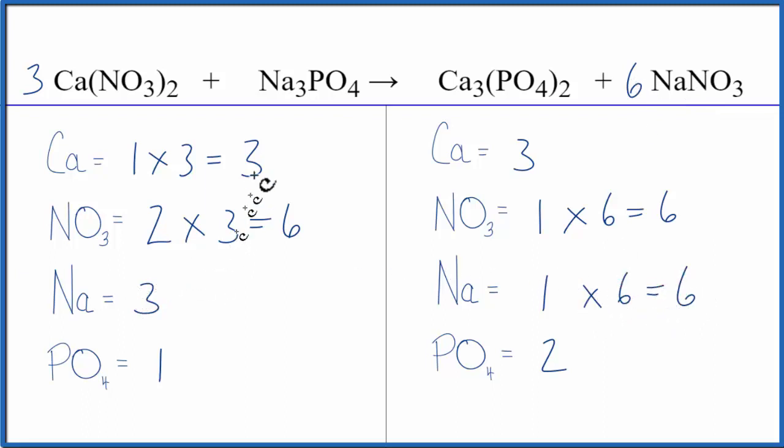We could just double the Na3PO4, the sodium phosphate, by putting a two in front of this. Three times two, that'd give us six. So that would fix the sodiums. And then one phosphate times two. That would give us two phosphates. So they are balanced. And we're done.